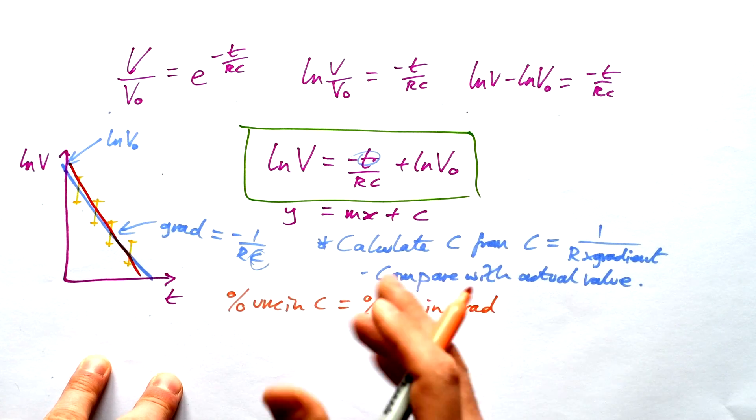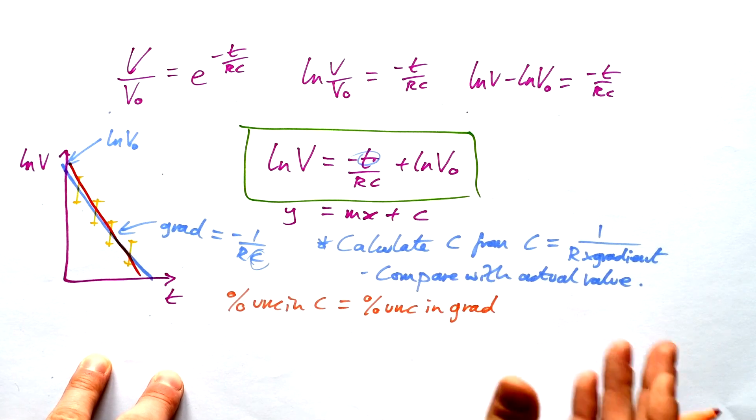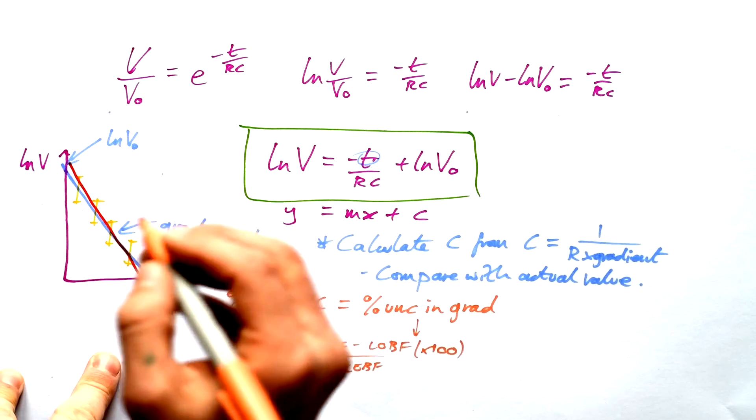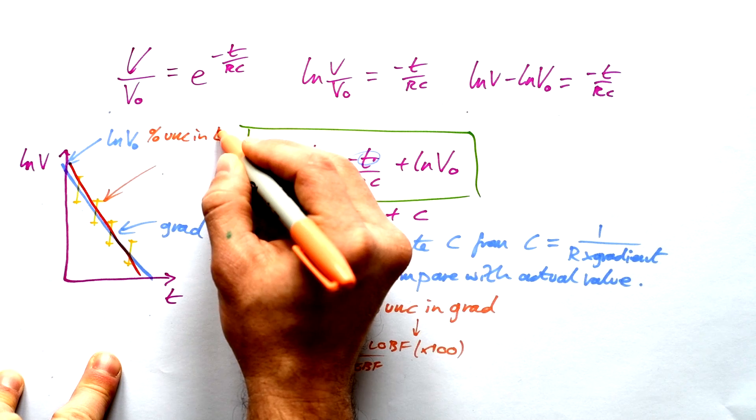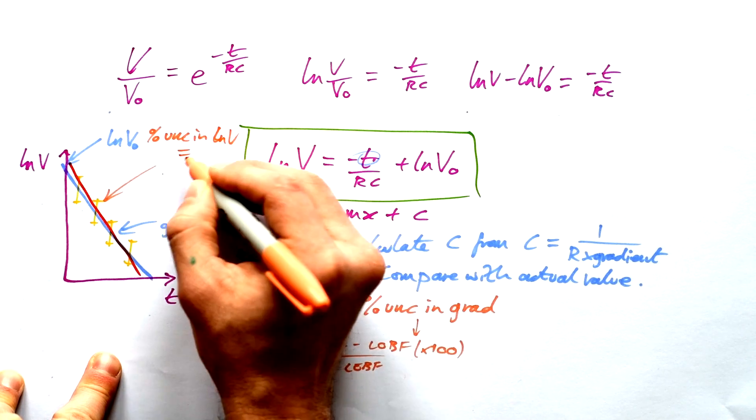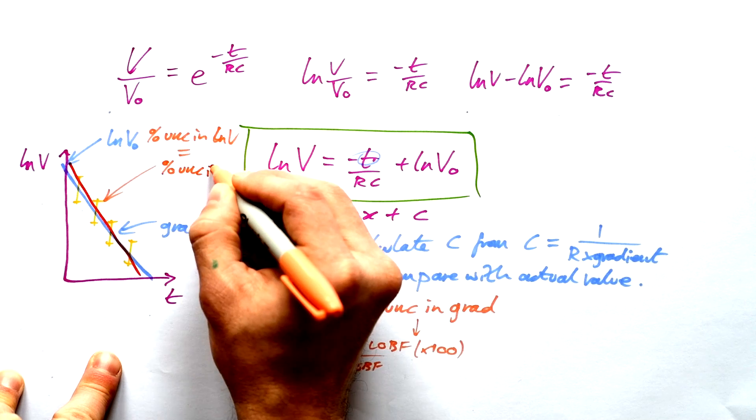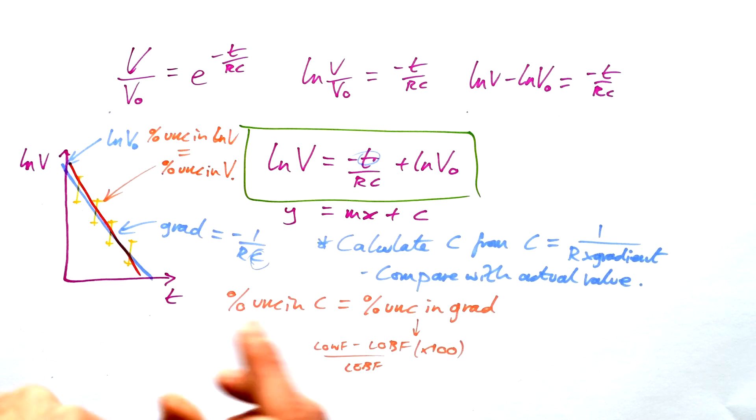So we can say percentage uncertainty in C is going to be equal to percentage uncertainty in the gradient. And as per usual, that's line of worst fit, take away line of best fit over line of best fit times 100. But where do we get our uncertainties from? The percentage uncertainty in every value of log V is equal to the percentage uncertainty in your initial reading of the voltage of the PD.